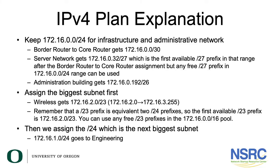Now we'll give you the IPv4 plan explanation to understand how we came up with all of these prefix allocations. We're going to use the first /24 prefix — 172.16.0.0/24 — for the infrastructure and administrative network. The border router to core router gets 172.16.0.0/30. The server network gets the prefix 172.16.0.32/27, which is the first available /27 prefix in that range after the border router to core router assignment. The administration building gets 172.16.0.192/26, which is also a free /26 prefix in that range.